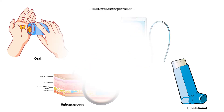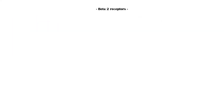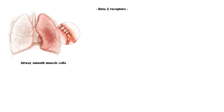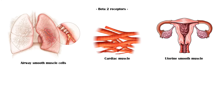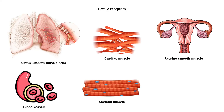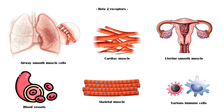Beta-2 receptors are predominantly located in airway smooth muscle cells. In addition, they can be found in the cardiac muscle, uterine smooth muscle cells, blood vessels, skeletal muscle, and in various immune cells.